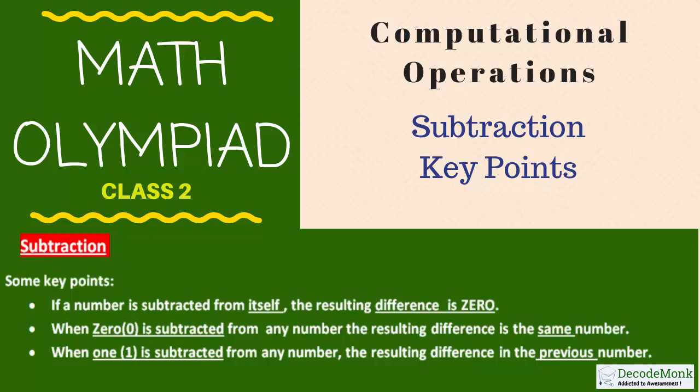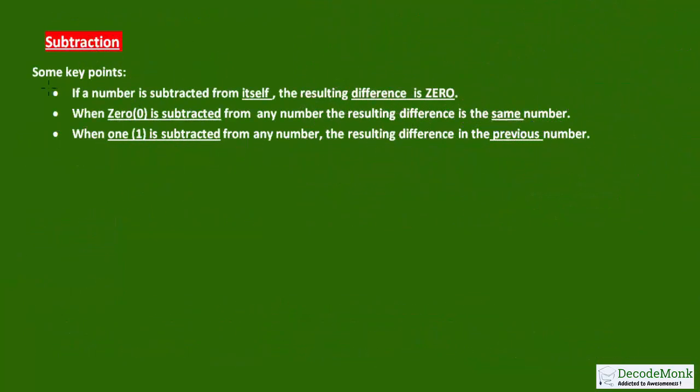Here are some key points related to subtraction. Number one: if a number is subtracted from itself, the resulting difference is 0. This means that if you subtract a number from itself, for example 5 minus 5, it will be equal to 0.